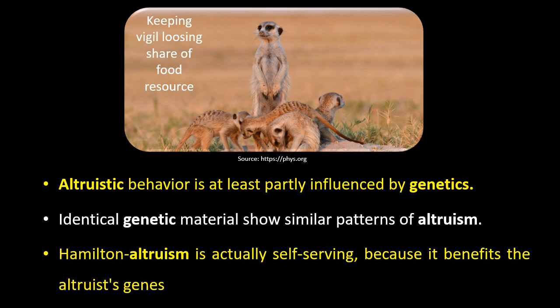Hamilton recognized Altruism as a self-serving one because it benefits the Altruist gene, though the Altruist is losing its reproductive capability or reproductive fitness. But in turn, it is the copies of the Altruist gene being helped to perpetuate or increase in number. So Hamilton considered it as an actually self-serving one.